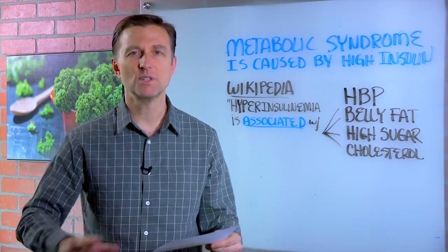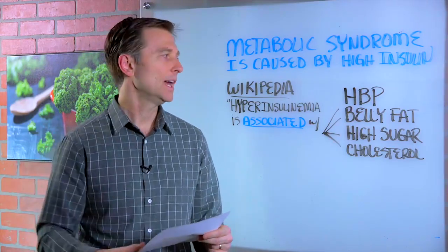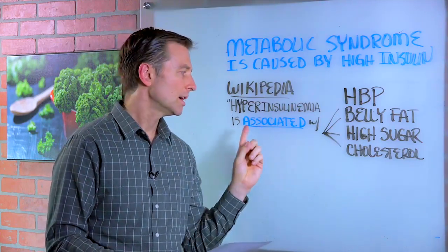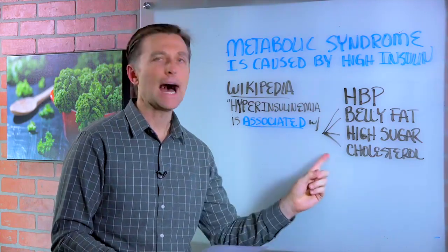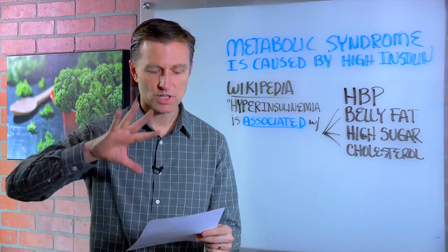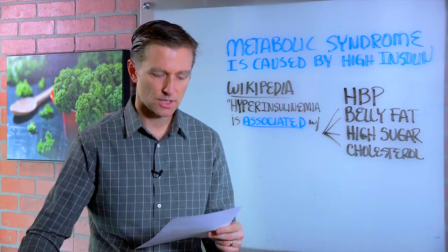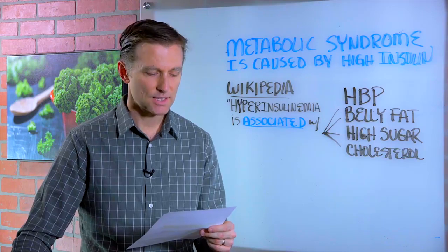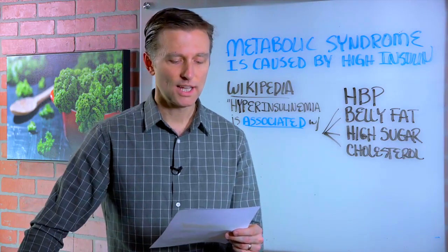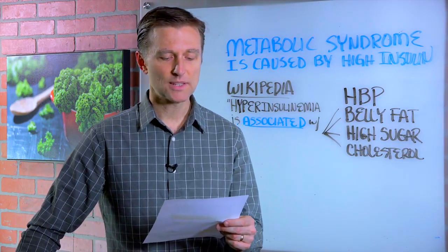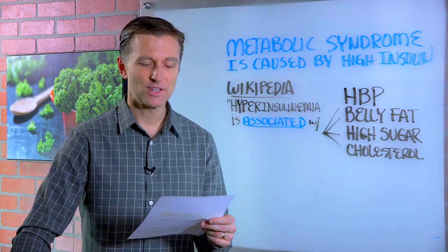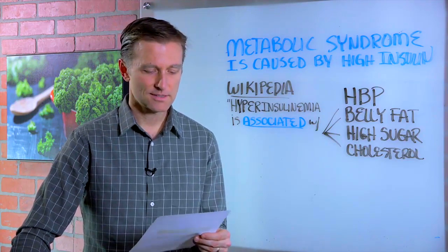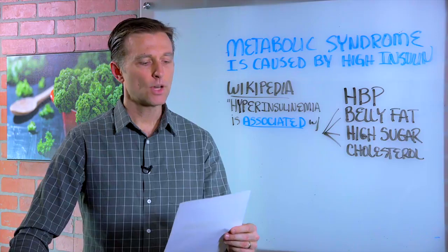Wikipedia says this close association between high insulin and conditions of metabolic syndrome 'suggest or relate a common mechanism of pathology.' This just confuses people. It doesn't suggest it — they're unable to connect the dots effectively. High insulin has been shown to play a role in obese hypertension by increasing sodium retention.